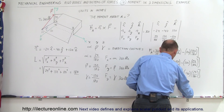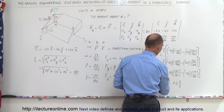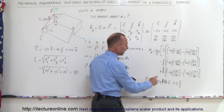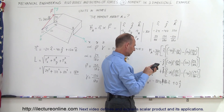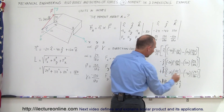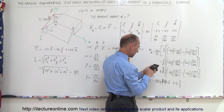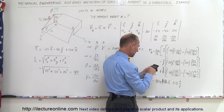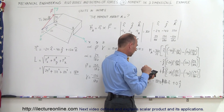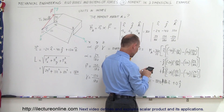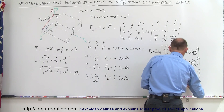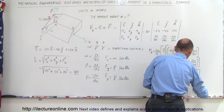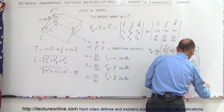For the K component: minus 24 times 132 over 180 is negative, and plus 40 times 24 over 180. Multiplying by 360 and dividing by 12 gives minus 368 foot-pounds in the K direction.